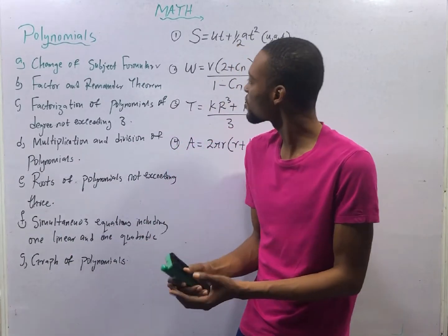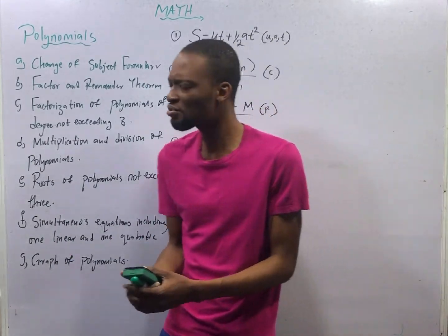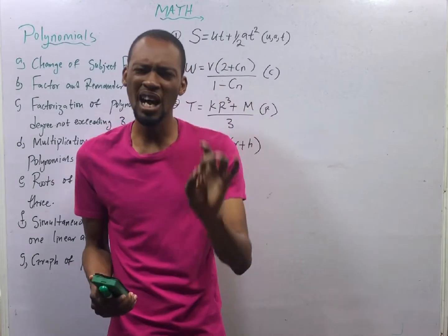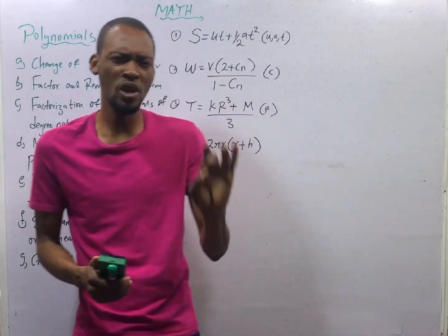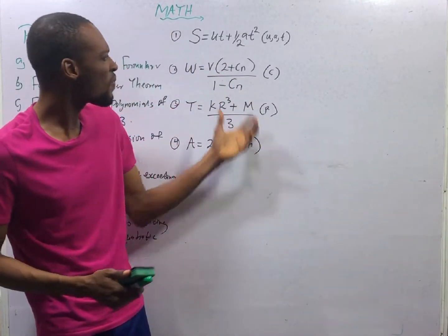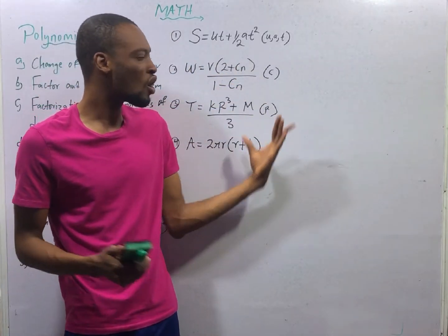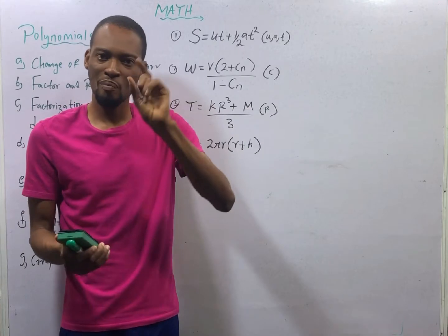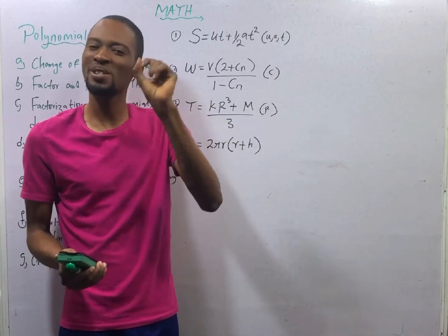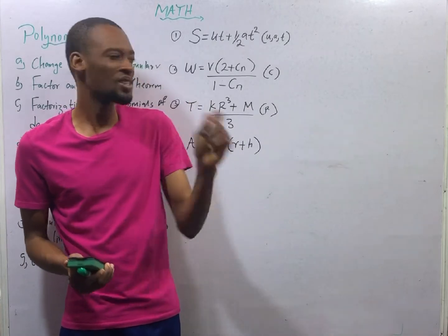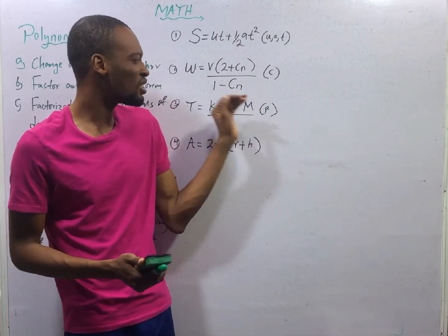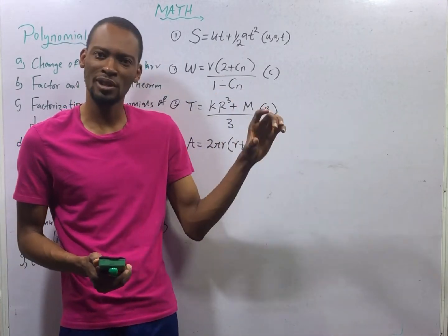This is episode number 29 of the 120 Days to JAM Mathematics with Flash Isaac. In this episode, we shall be answering JAM standard questions under change of subject formula, and also post-UTME standard questions under change of subject formula.